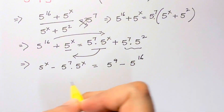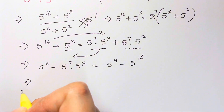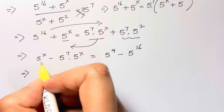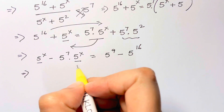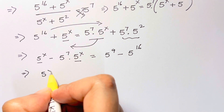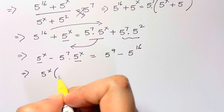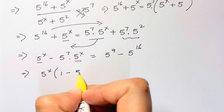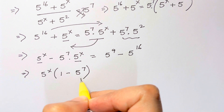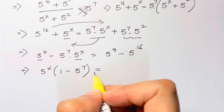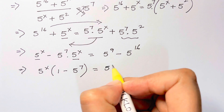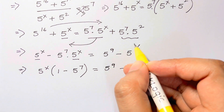Then I have 5 to the x and 5 to the x — let me take it out as a common factor. So I have 5 to the x times the quantity 1 minus 5 to the 7th, which is equal to 5 to the 9th minus 5 to the 16th.